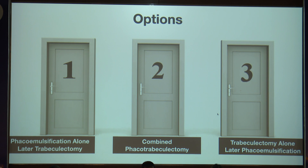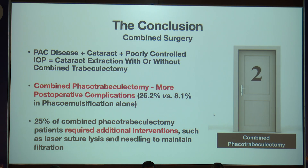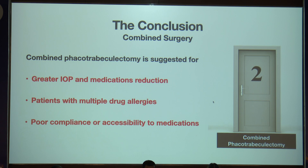As a glaucoma person you have three options: phaco alone, combined surgery, or trabeculectomy alone. If you have primary angle closure disease with cataract and poorly controlled IOP, you can go with cataract extraction alone and do a trabeculectomy later, or go with a combined surgery. Combined surgery is preferred when you want a greater IOP reduction, to bring down the number of medications — especially for patients with multiple allergies or poor compliance — or when low tolerance to post-operative complications is expected. With combined surgery, complications were reported to be more and you may need more future interventions like bleb needling or laser suturolysis.